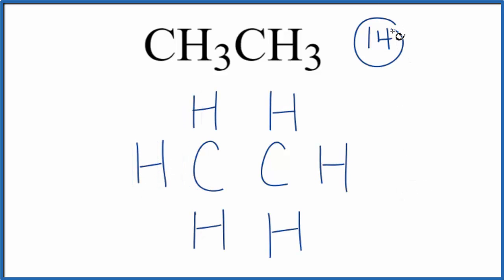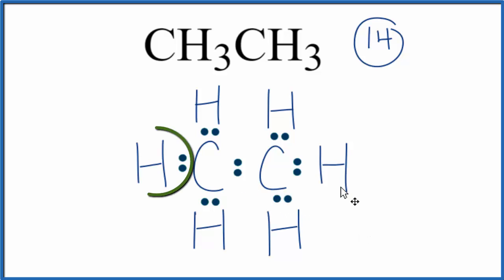So we have a total of 14 valence electrons for CH3CH3. We're gonna put 2 between atoms, that'll form the chemical bond. So far we've used 12 electrons, 12 of our valence electrons. We'll put the last 2 here on the carbon.